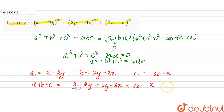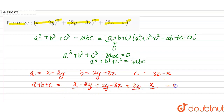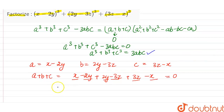Positive x and negative x give 0. Negative 2y and positive 2y give 0. Negative 3z and positive 3z give 0. So the value of a plus b plus c is equal to 0. Therefore, we can say that a³ plus b³ plus c³ will be equal to 3abc.